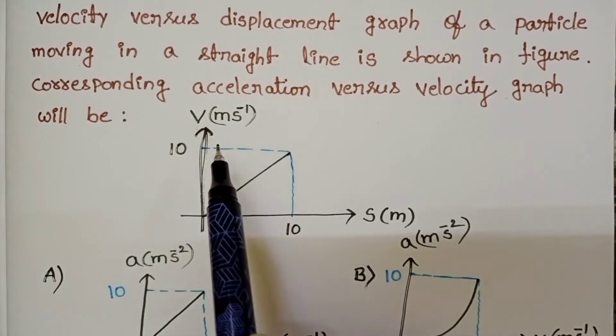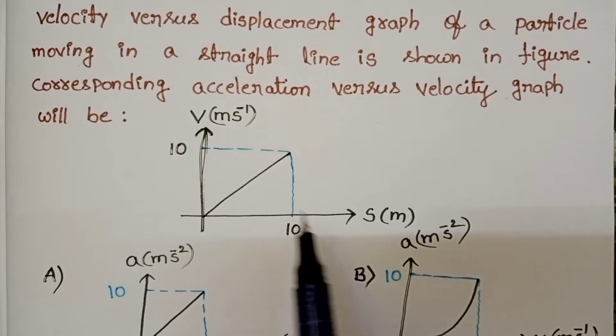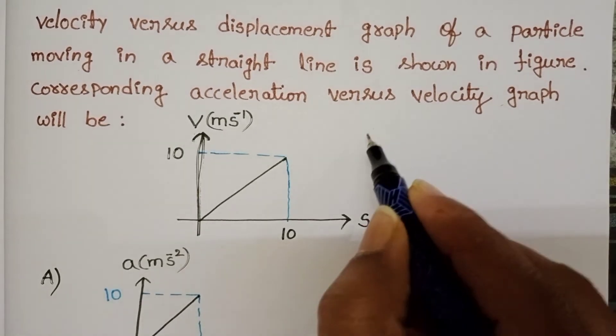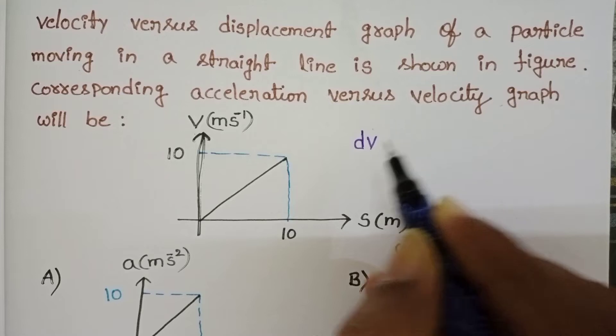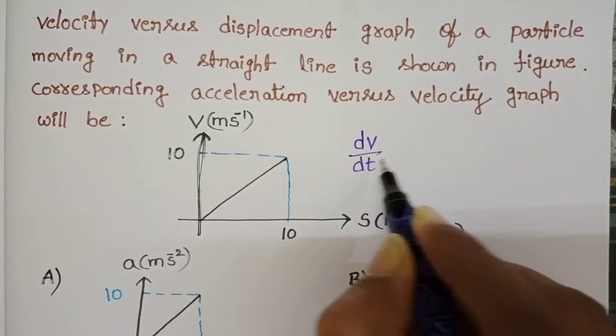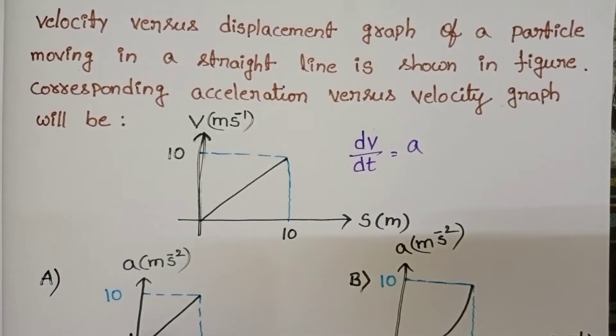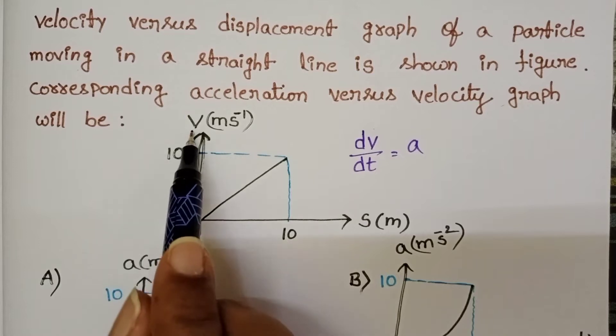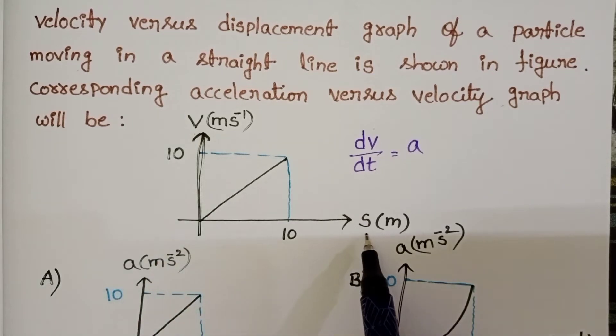This is a velocity versus displacement graph. Rate of change of velocity gives acceleration, but the given graph is velocity versus displacement.